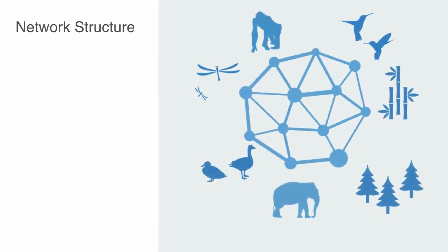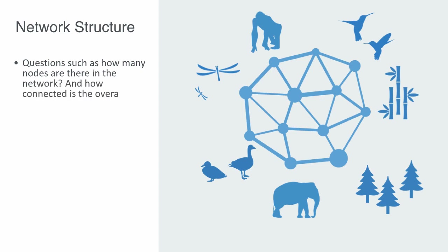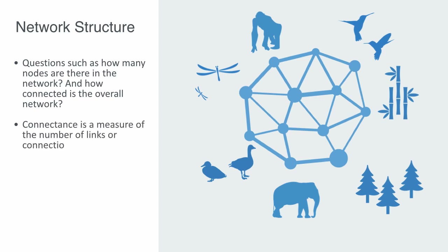Network structure describes patterns and structures within the overall ecological network. Here we're asking questions such as: how many nodes are there in the network, and how connected is the overall network? The overall level of connectivity in a network is a primary factor determining the nature of any network in an ecosystem. This is called connectance — a measure of the number of links or connections between species expressed as a proportion of maximum connectance.